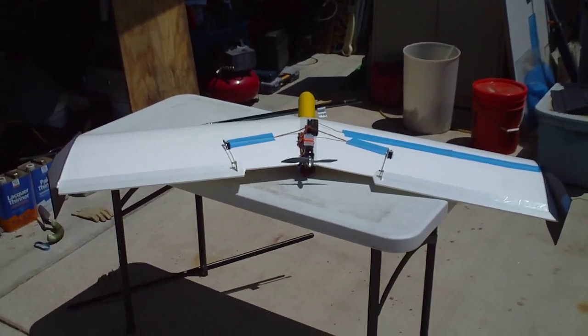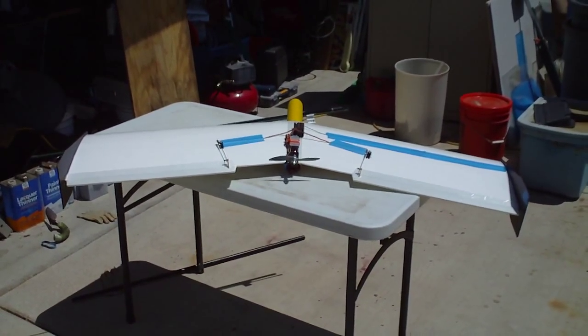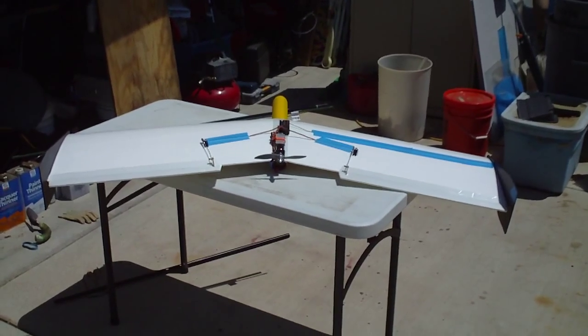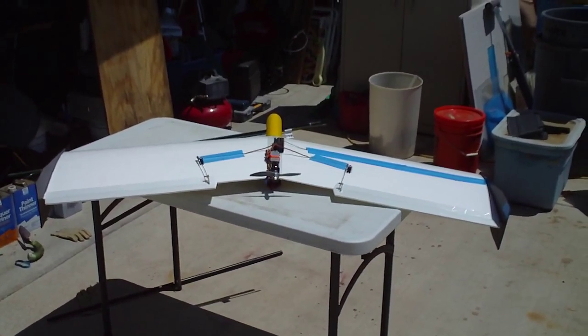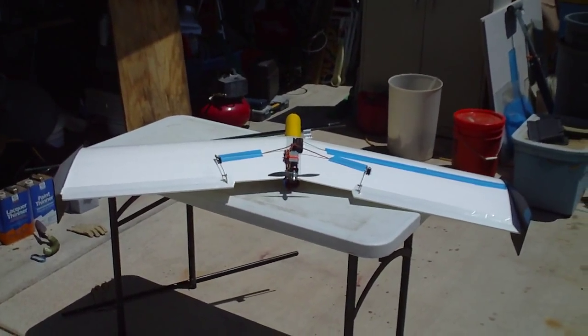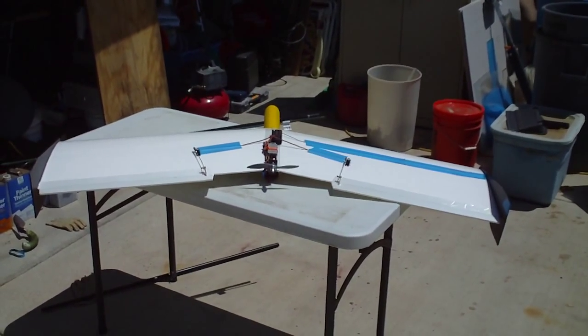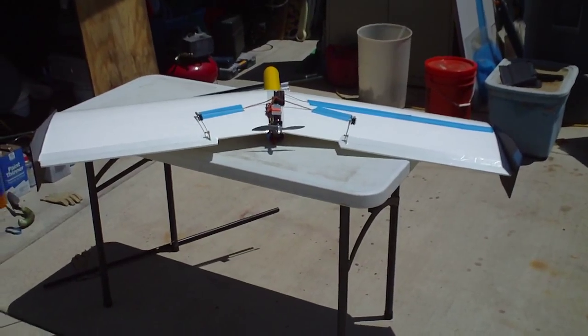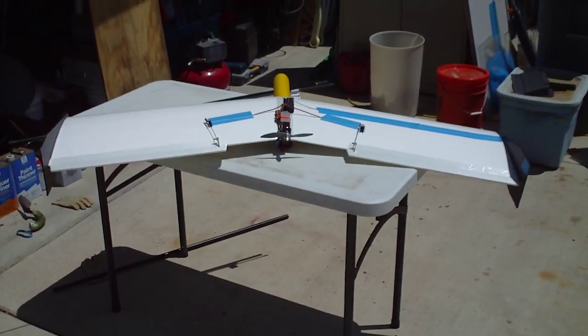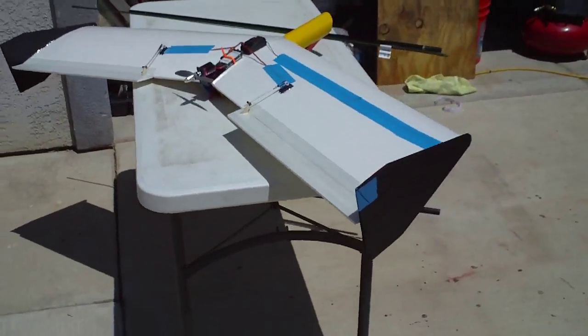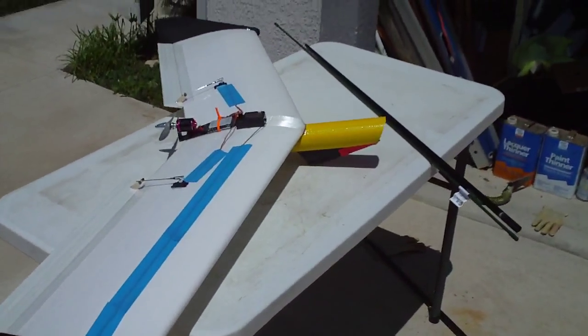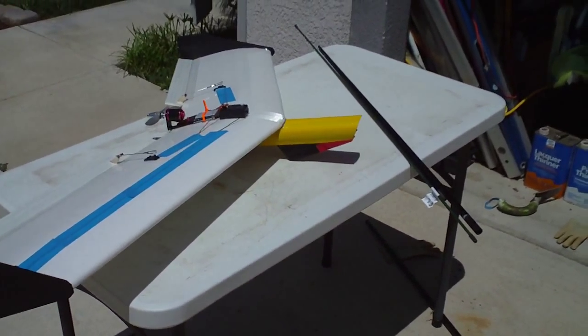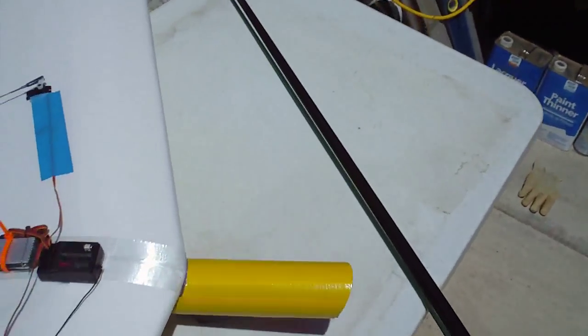So outside to outside is 53 and 3 eighths approximately with those coroplast plastic signboard wing tips. I had some of that lying around. I also made a skid on the fuse under the nose there to keep it off the ground. Let me demonstrate that on the ground.